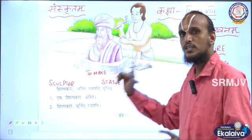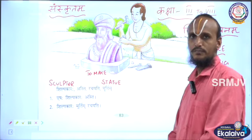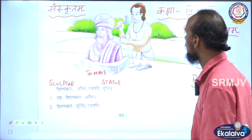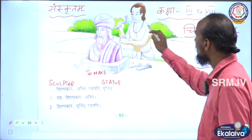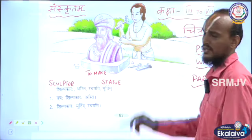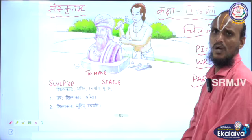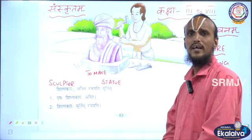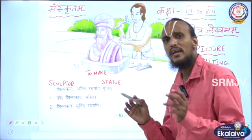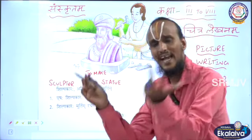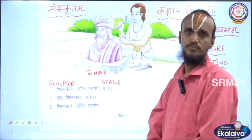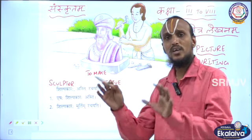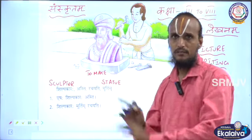Now I will teach you. See this picture. He is a sculptor. What is the sculptor doing? He is making a statue. This is the context here for Chitralekhanam.